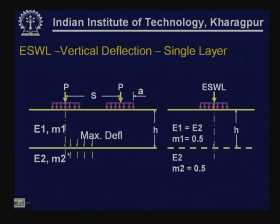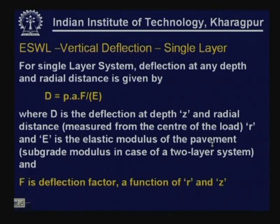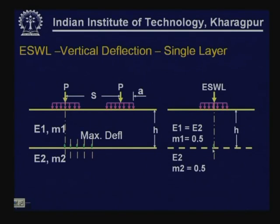To obtain the ESWL, we keep the contact radius of the equivalent single wheel load equal to that of one of the wheel loads. With the same pavement parameters, the maximum deflection for a single wheel is along the axis of symmetry at the interface. We find the wheel load that produces the same maximum deflection as the multiple wheel system — this is the ESWL.